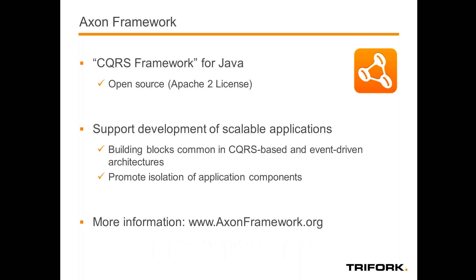So what is Axon? Axon is a CQRS framework for Java. It helps developers build applications using the CQRS architectural style. It's an open source framework under the Apache 2 license, which means you can download it and use it for free. You have access to the source code and you can use it for anything you like. It provides a lot of the very common building blocks that you have in CQRS and event-driven architectures, such as the event bus, and it allows you to build event handlers and process everything asynchronously if you want to.